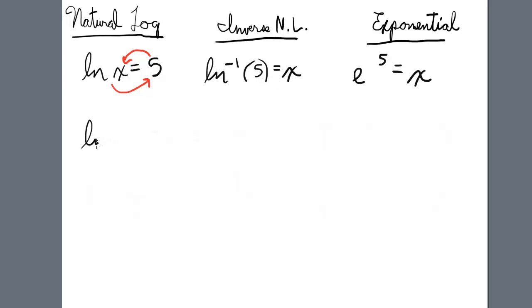Another example: if we have ln of y equals 0.3, first the exponential, that would mean e to the 0.3 equals y.